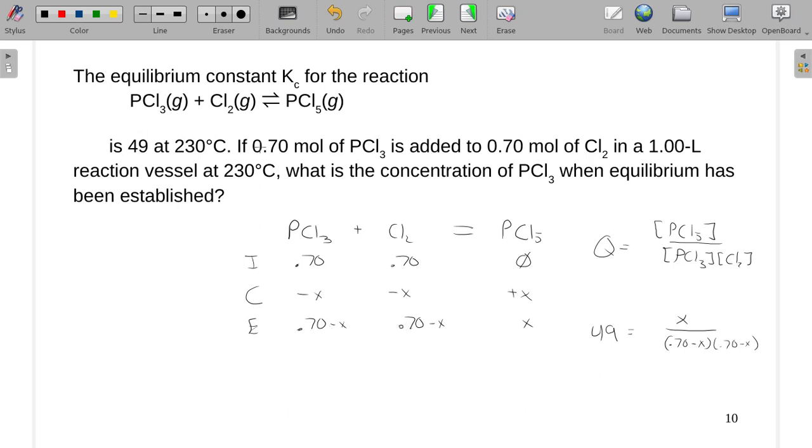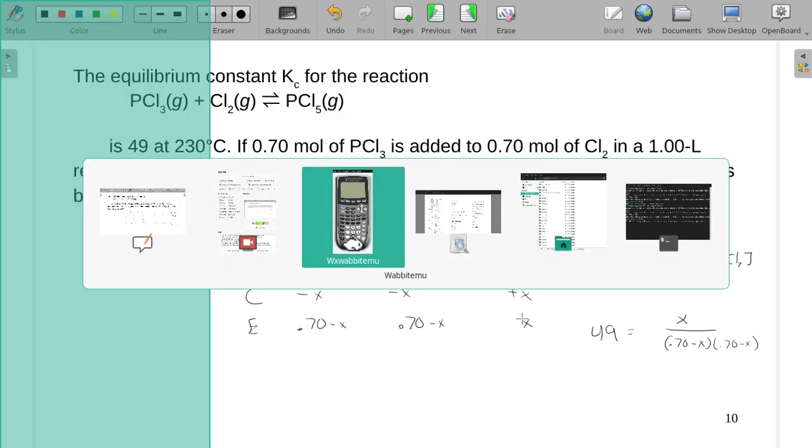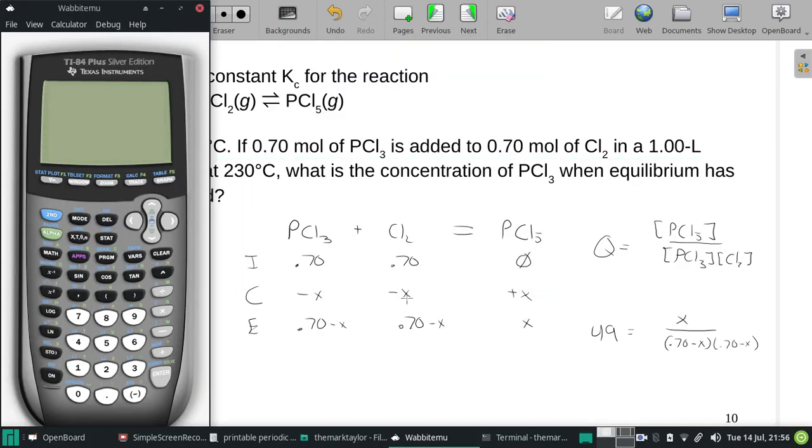Now, that's not realistic because we do have a pretty large K. So we are expecting this to go forward. We are expecting the X to be somewhat sizable. But this will get us a good example of why we should do this and why it won't work in this case.